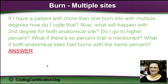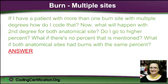This was a really interesting question about burns. We've covered burns before, but this was unique. The question was: if a patient has more than one burn site with multiple degrees, how do I code that? What happens with second degree burns on both anatomical sites? Do I go to a higher percent? What if there's no percent mentioned? What if both anatomical sites have burns with the same percent? I broke this down for us.